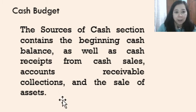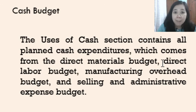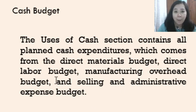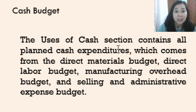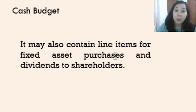For the uses of cash section, this contains the cash expenditures, which may be in the form of purchases of direct materials for production, labor expense, manufacturing overhead expense, and selling and administrative expenses — all of which have their own budgets that we can draw data from. The cash budget may also contain line items for fixed asset purchases and dividends paid to shareholders, as these are also forms of uses of cash.